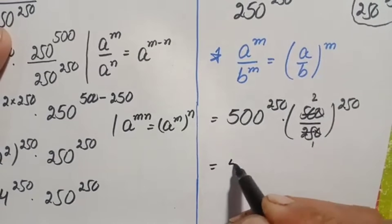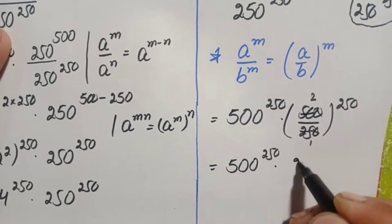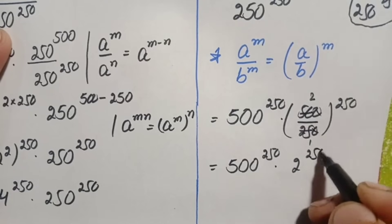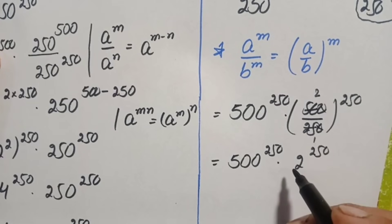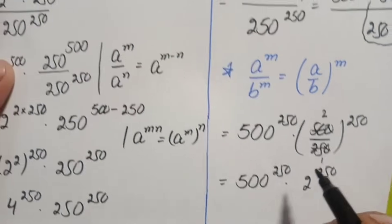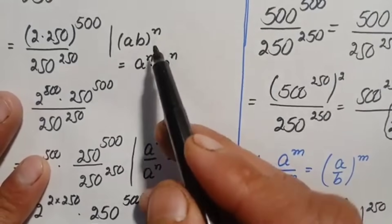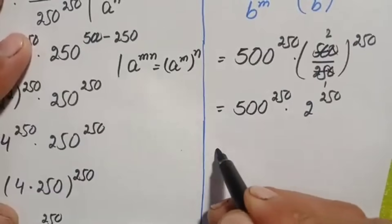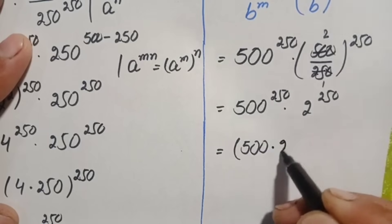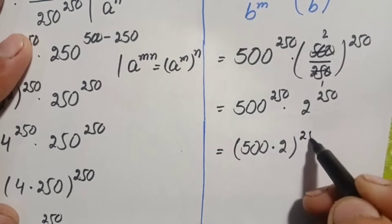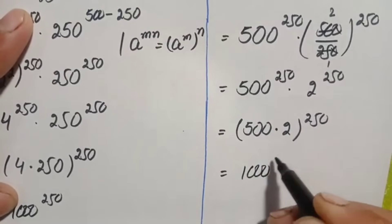So this will become 500 raised to power 250 times 2 raised to power 250. These two numbers have the same power, so here we use the same-power exponential identity and multiply the bases. The bases are 500 times 2, and the power is 250. Now 500 times 2 is simply 1000, so this gives 1000 raised to the power 250.